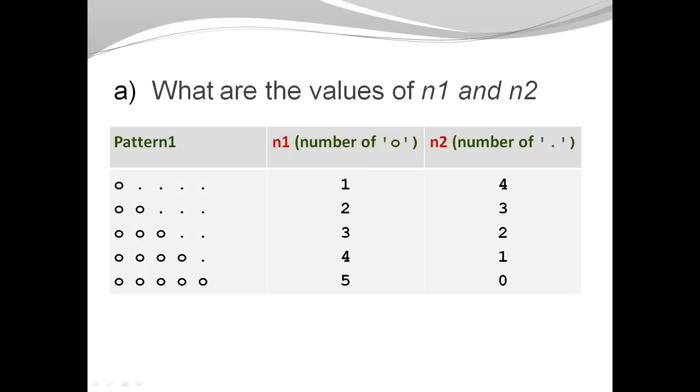So here is my table. In my first row, I have one circle and four dots. In my second row, I have two circles, three dots, et cetera.